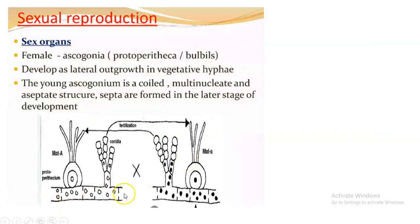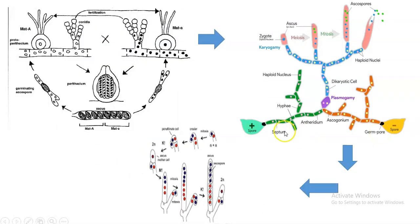Coming to sexual reproduction — you can see the vegetative thallus. There is formation of a conidium within a closed structure called proto-perithecium. The perithecium is the ascocarp of this particular Neurospora genus. Within this closed body called perithecium, there will be the ascogonium, and from the ascogonium, these particular structures called trichogyne are formed. This trichogyne will be receiving spores from different thalli. From the conidia of a different strain, the conidia has fallen on the trichogyne of another thallus.